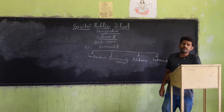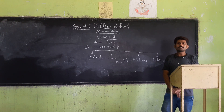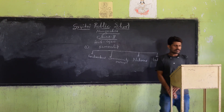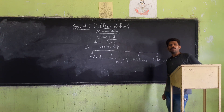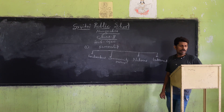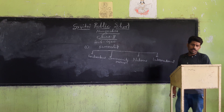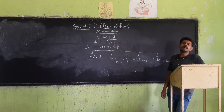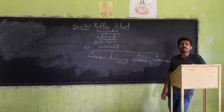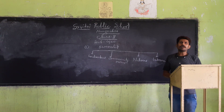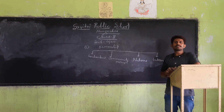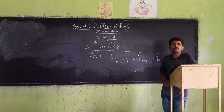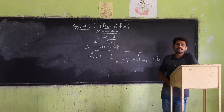Everything within the national boundary of a country is considered national property. Technically, all resources belong to the nation. The country has legal power to acquire even private property for the common good. For example, a large area was acquired by the UP government for the development of Greater Noida, as NCR is expanding day by day.